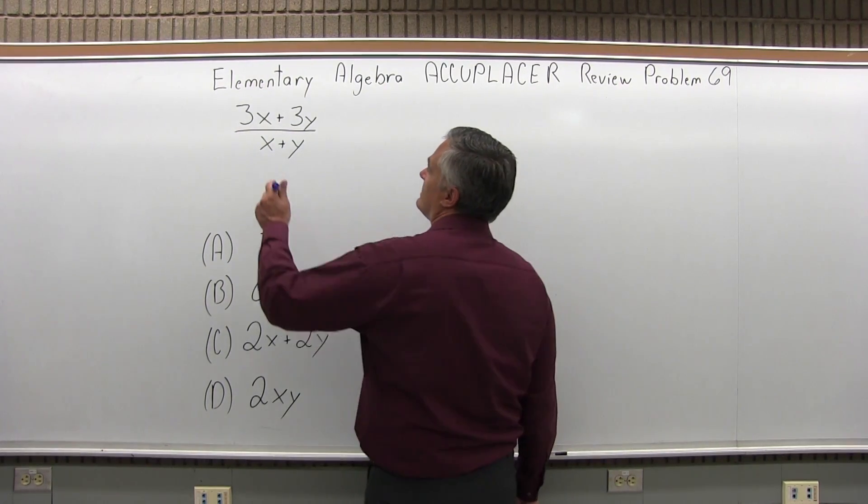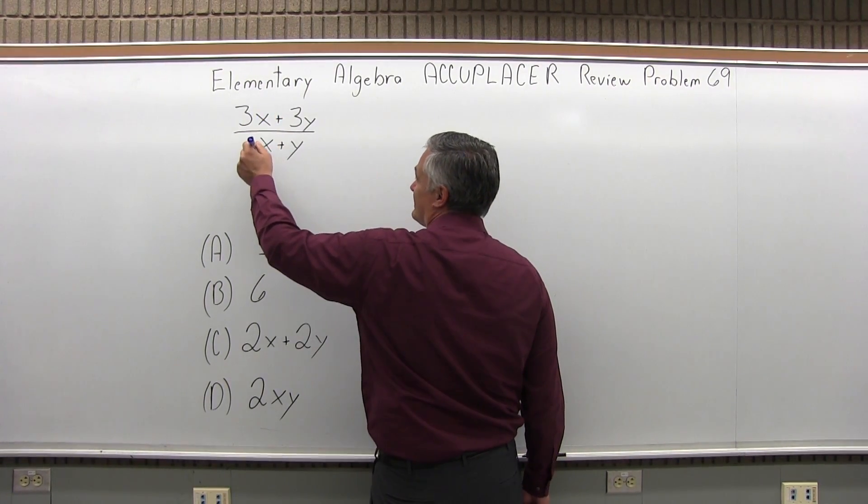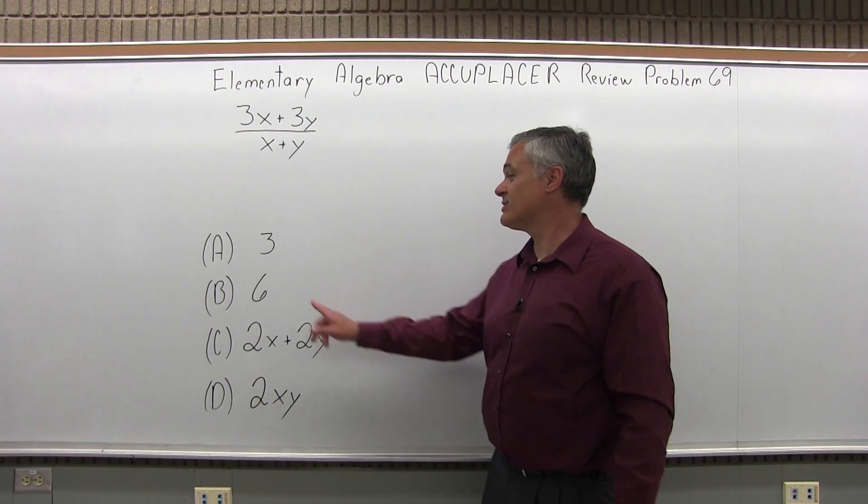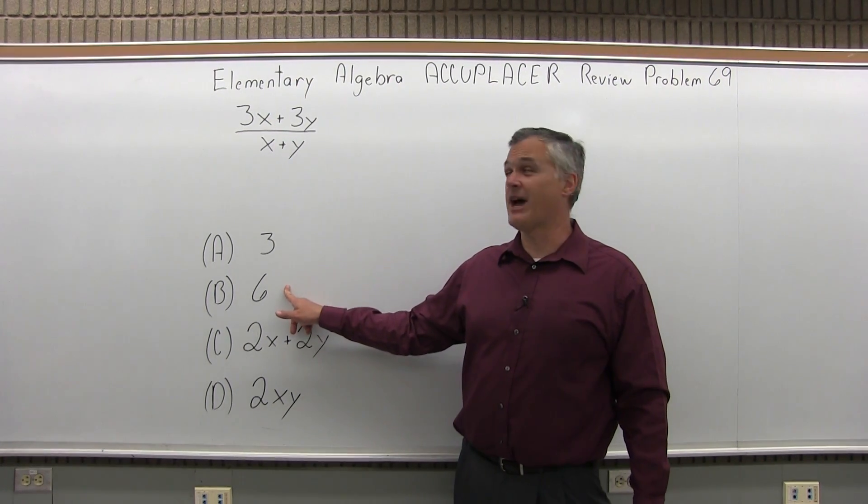Some people might want to cancel the x, cancel the y, and be left with 3 plus 3, which is 6, which is one of the options. You can't do that.